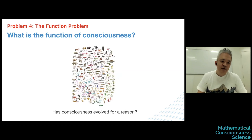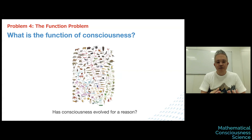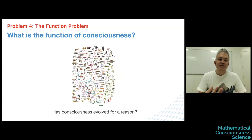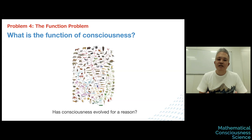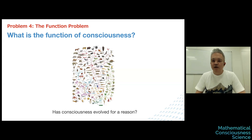The fourth problem is the function of consciousness. When we think about the hard problem, we tend to assume consciousness may not have direct causal impact on the physical system, and in that sense we often neglect potential functions of consciousness. But when we consider the evolution of many creatures, we wonder whether consciousness played any functional role. What kind of functions are achieved by having consciousness in biological systems? That's a difficult question, but I think it should also be answered.